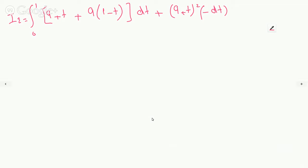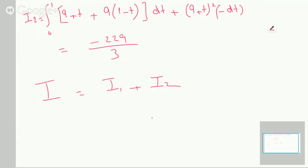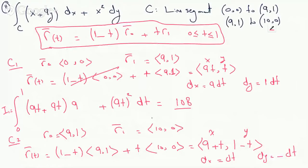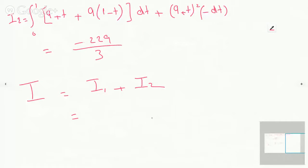So this one turns out to be negative 229 over 3. And our answer, of course, will be i1 plus i2. We add the contributions of both line segments from both line integrals. The first one was 108, and the second one is this, so 108 minus 229 over 3. And the final answer is 95 over 3.